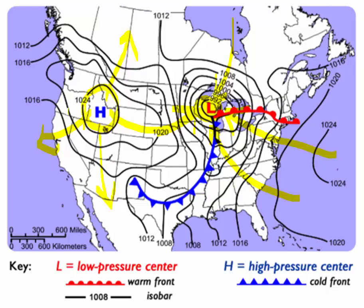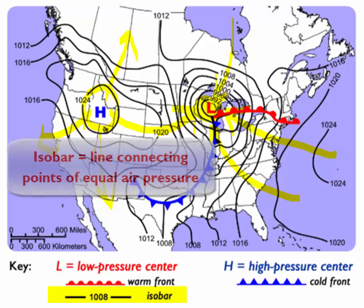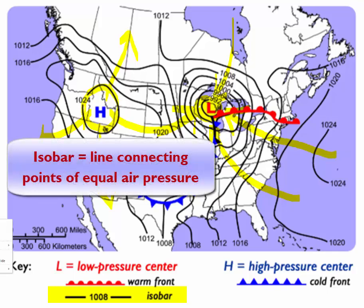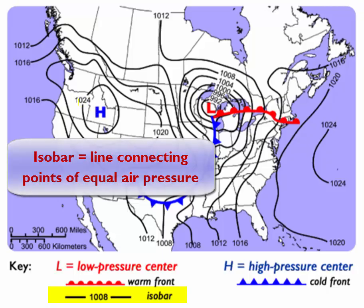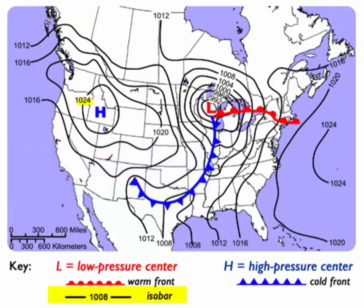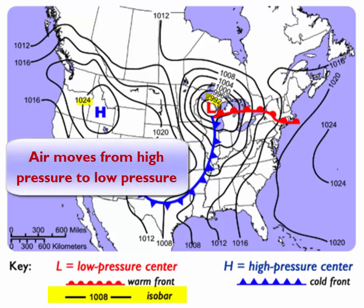So the lines are what we call isobars, which are lines connecting points of equal air pressure, and air is going to move from high pressure to low pressure.